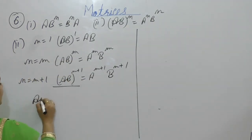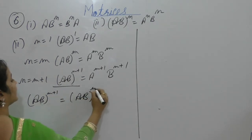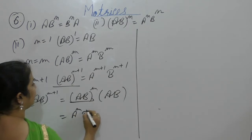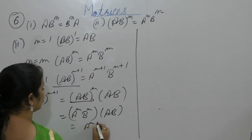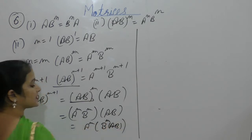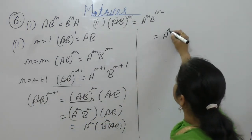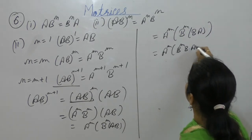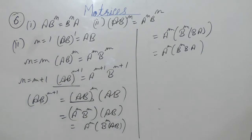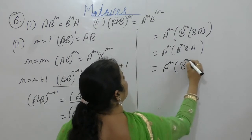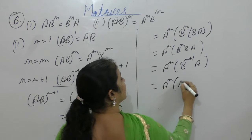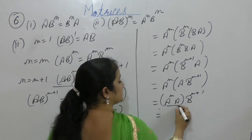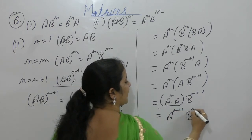Take the left hand side: (AB)^(m+1), we can write it as (AB)^m into AB. The value of (AB)^m is A^m·B^m, so we get A^m·B^m·A·B. Since A and B commute, we can write it as A^m·B^m·B·A, giving A^m·B^(m+1)·A. In the next step, we write it as A^m into A into B^(m+1), which gives A^(m+1)·B^(m+1).